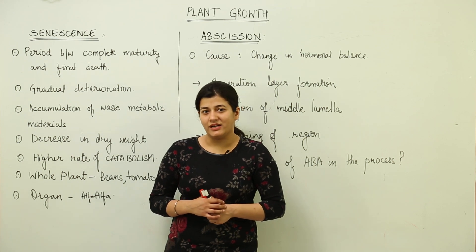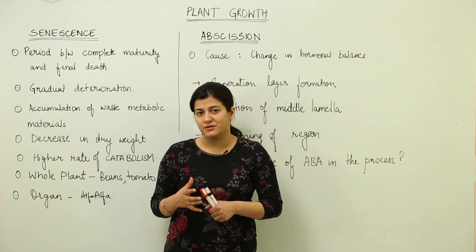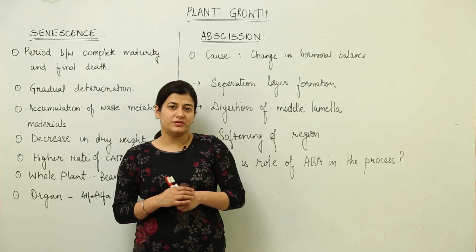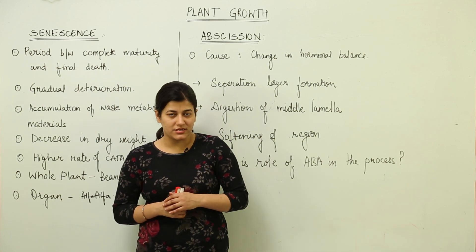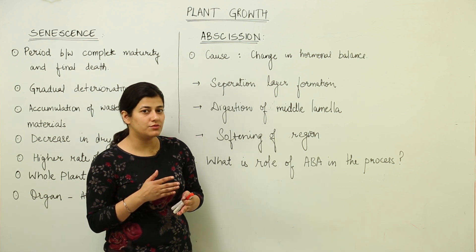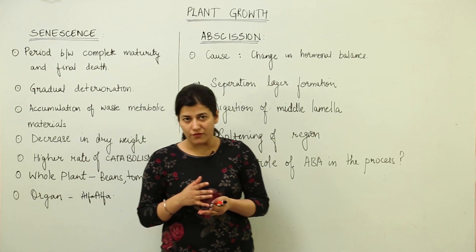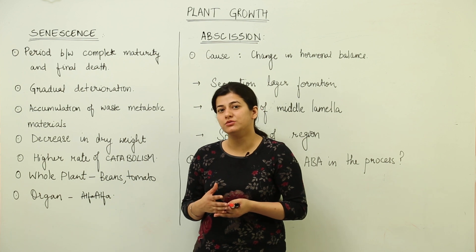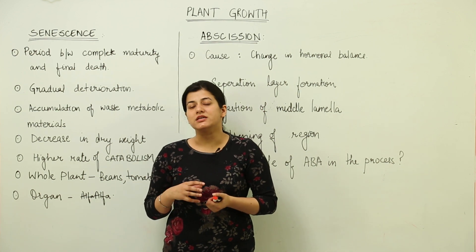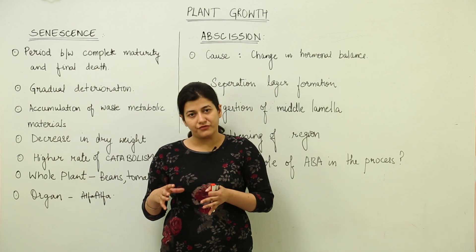We are going to study how a plant dies — what is the process behind its death. A plant is basically an organism with a definite lifespan. That lifespan comes to an end by the process of senescence, which ultimately leads to death of the particular organism. Plants have three phases of their life.